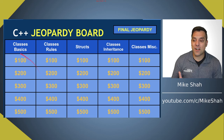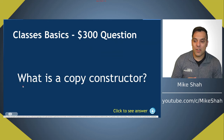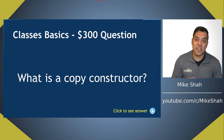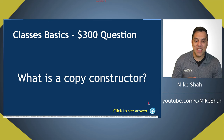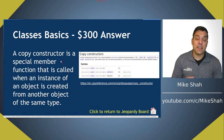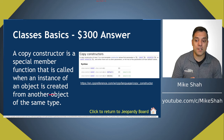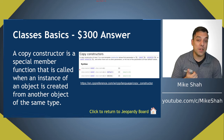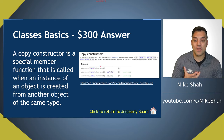Now for 300: what is a copy constructor? A copy constructor is a special member function that's called when an instance of an object is created from another object of the same type. Remember where copy constructors are called, how to create one, using the class name, and making it const because we don't want to modify the particular object as we're making the copy.